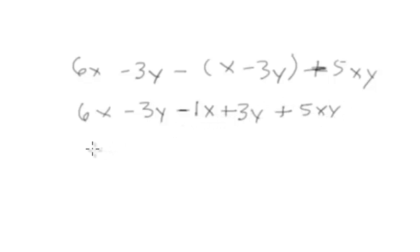Okay so now we've got like terms. We've got negative 3y and 3y, and 6x and negative 1x. So 6x minus 1x is going to be 5x. And then you've got negative 3y and plus 3y, they actually negate each other out so that's 0, so you don't have that anymore. Plus you have 5xy, which was not a like term there.